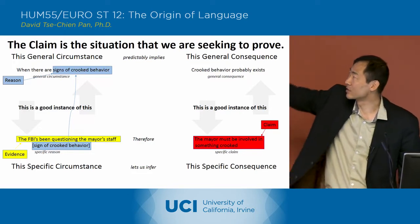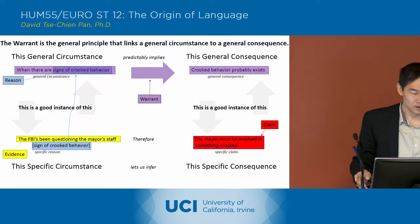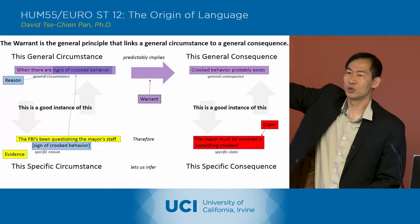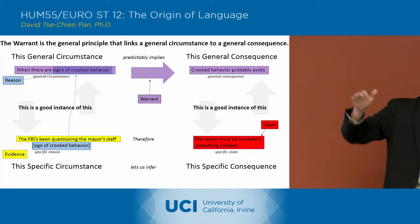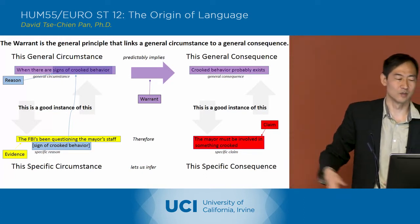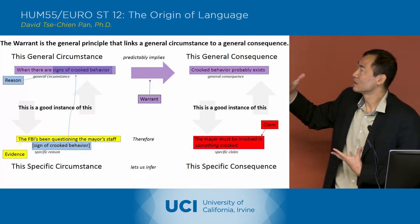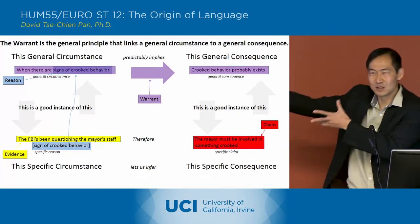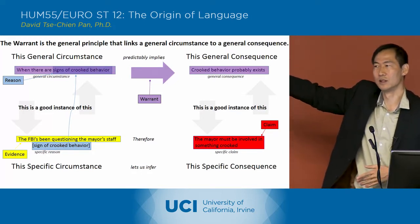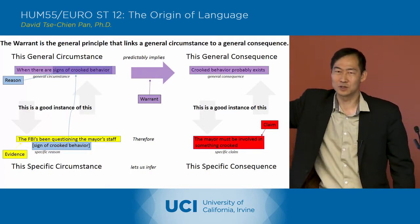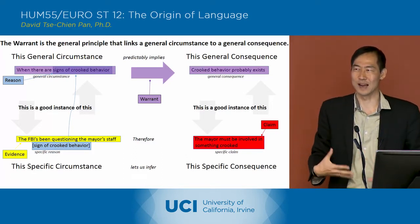Then we have the claim — the specific claim down here — and the way we're linking it up is through this warrant. Their argument is that the warrant is the general rule that links signs of crooked behavior to the general consequence. According to their explanation, the warrant is this general rule that allows us to make the specific connection between specific reason and specific claim. That's how they've laid it out.